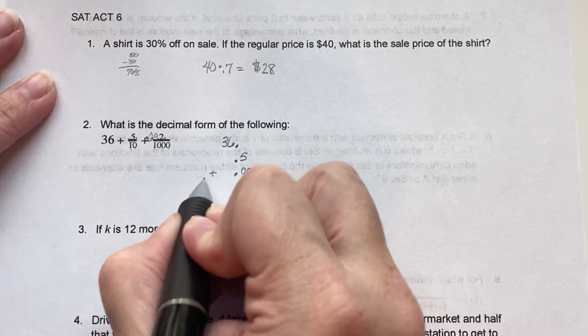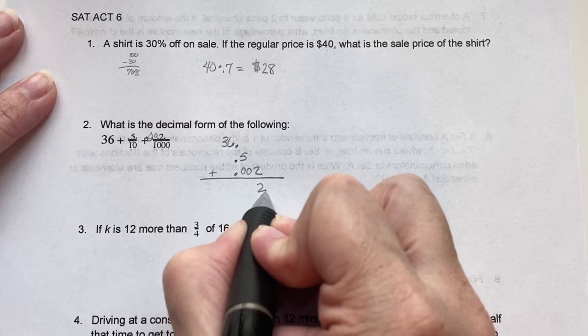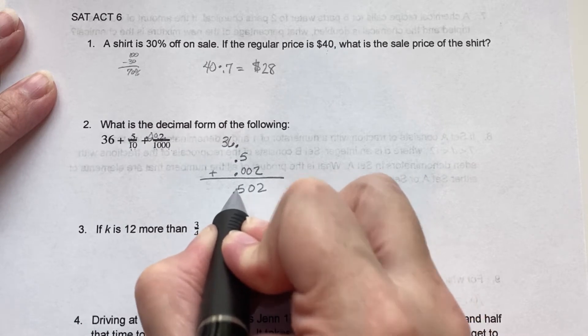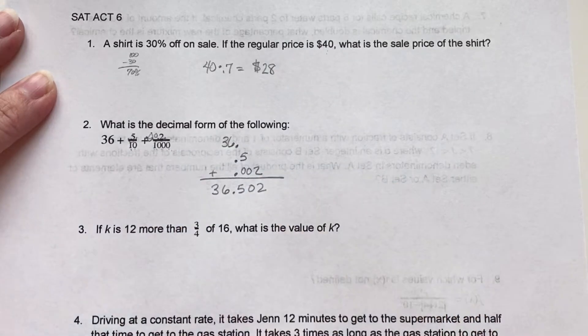1, 2, and 2. And then we just add straight down 2, 0, 5, 6, 3.